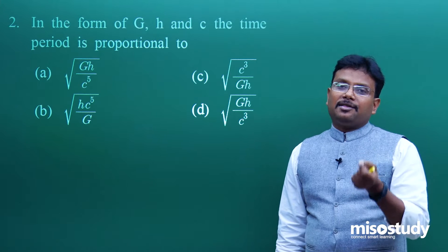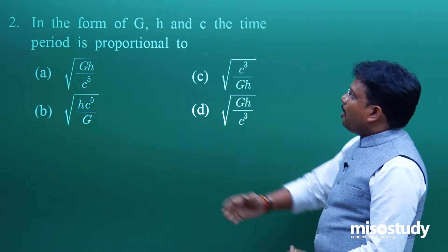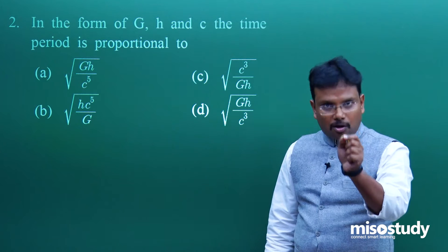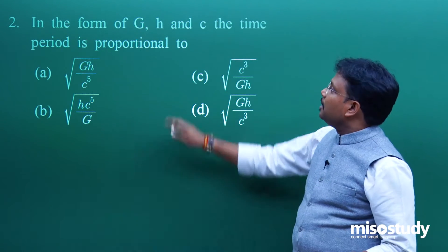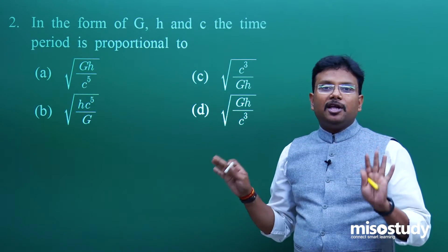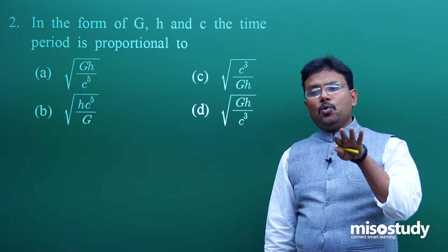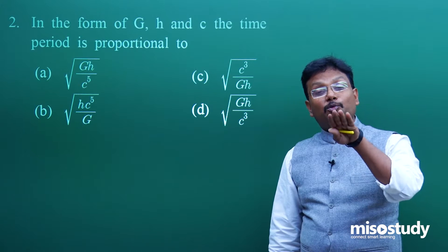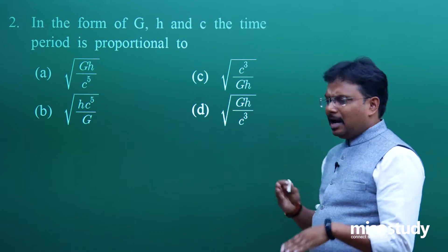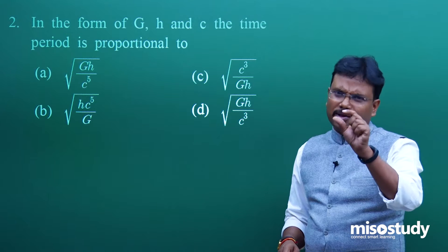Next question I picked from your first chapter of class 11: dimensional analysis, errors, vectors, significant numbers. This chapter is very important with several subtopics. The question involves G (universal gravitational constant), H (Planck constant), and C (speed of light). The time period is proportional to - you're supposed to find the dimensional formula of time period in terms of G, H, and C. There are various methods to solve this problem, but I'm telling you a simple approach.